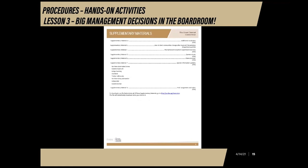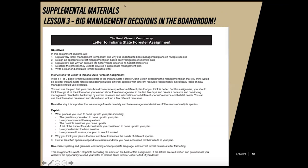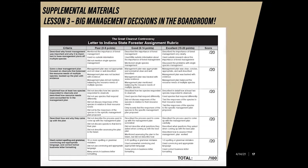Thank you for watching this video on Lesson 3, Big Management Decisions in the Boardroom. The supplementary material G that Emily referred to is the rubric for the Letter to Indiana State Forester assignment. This optional assignment describes the objectives of what students should be doing and learning, instructions on how to write the letter, and how to explain the process used for their plan. The next slide has criteria for the assignment rubric, which you can use for the optional assignment included in Lesson 3.